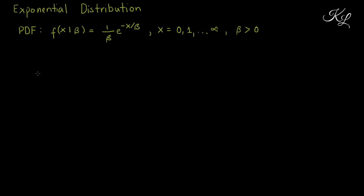Hello everyone. In this video, I'm going to show you how to derive the mean, the variance, and the moment generating function for the exponential distribution with the probability density function shown here. f(x) given parameter beta is equal to 1 over beta times e raised to negative x over beta, where this PDF is defined from x equals 0 to infinity and beta greater than 0.